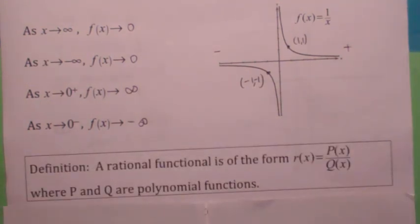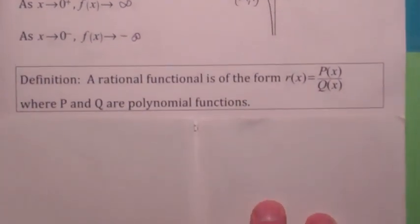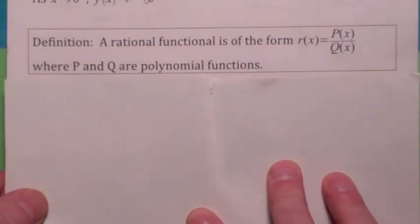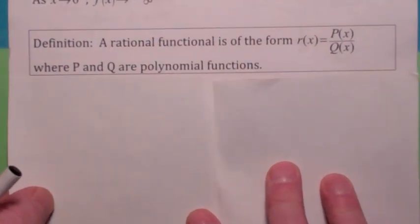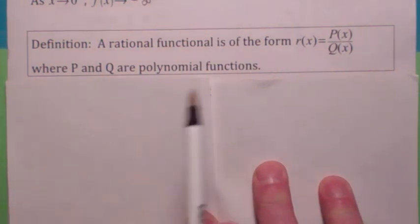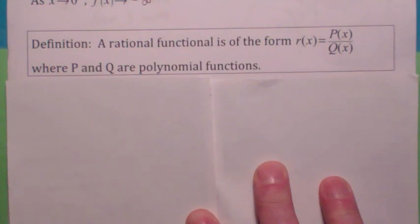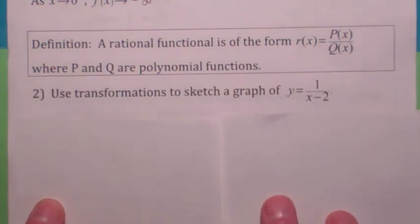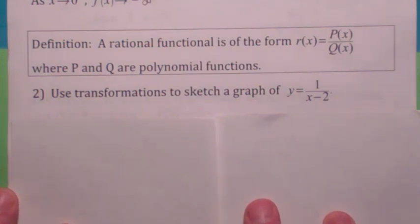Let's define what a rational function is. A rational function is kind of a generalization of a rational number. A rational number is the ratio of two integers; a rational function is the ratio of two polynomials. Sometimes you can use transformations to sketch some of these.